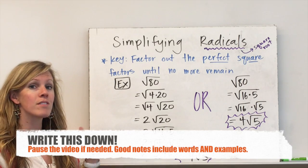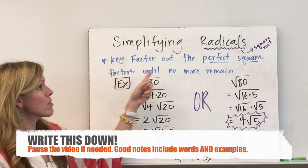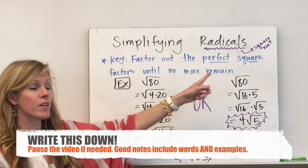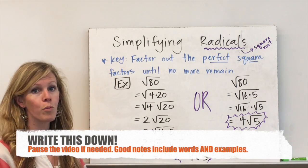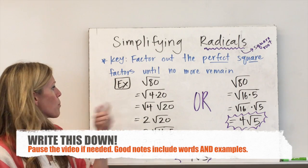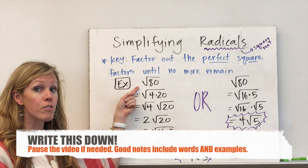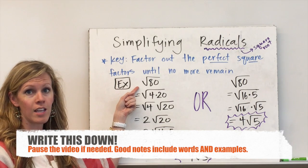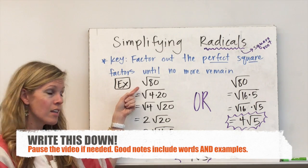The key to simplifying radicals is to factor out the perfect square factors until no more remain. So let's say we are presented with radical 80, or the square root of 80, and you're asked to simplify it.